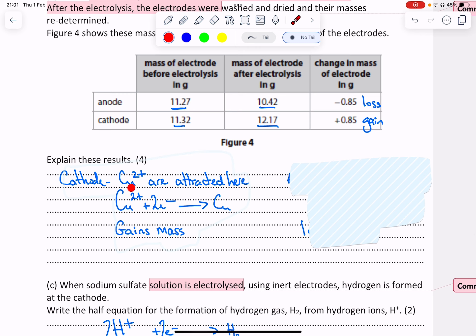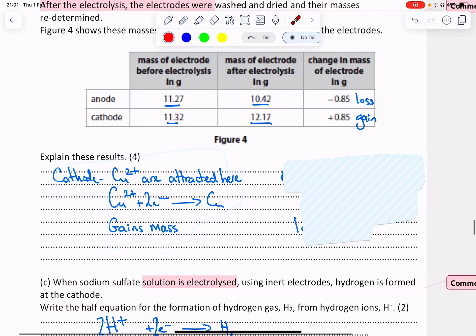At the cathode, we have copper ions being attracted there and they are going to gain electrons to form copper metal. Because we're making new metal, this means the mass at the electrode is going to increase. It's going to gain mass.